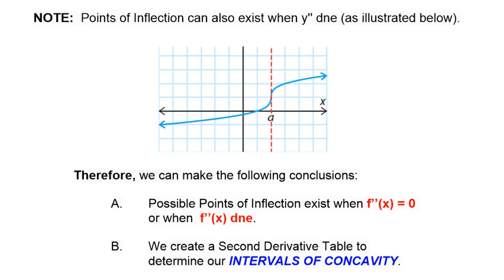We're going to create second derivative tables and use those to determine our intervals of concavity — where the function is concave up and where it's concave down. In this case, one section is concave up, another section is concave down, so there is a change in concavity and a point of inflection right there — but the second derivative would not be equal to zero; it would not exist at that point.